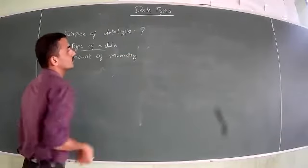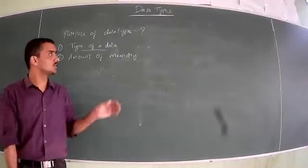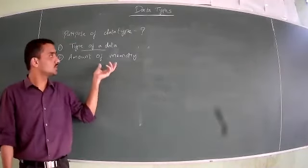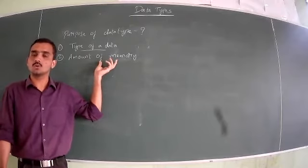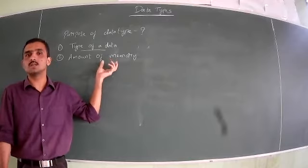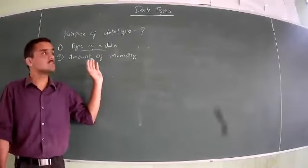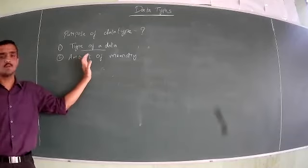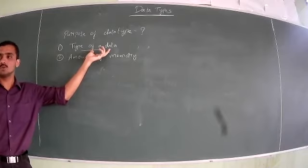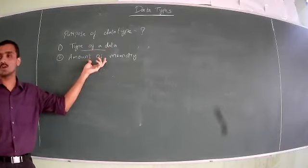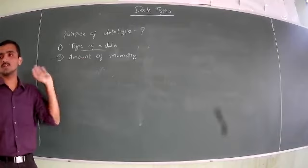Whenever we type something from the keyboard, it will be stored in computer memory. The processor will access it and it will be stored in computer memory. When it is stored in computer memory, we should know how much amount of memory it is taking for that particular data — to store the digit 1, or the value 55.25, or the value XYZ. For these two reasons, data type is required: first, to know the type of data being entered from the keyboard; and second, to know the amount of memory required to store that particular data.